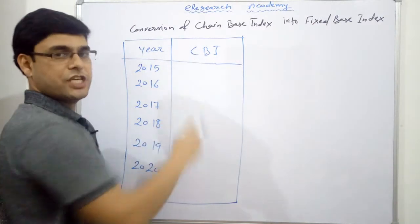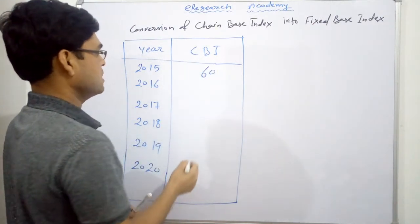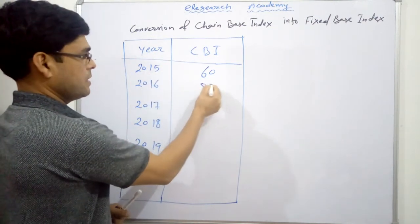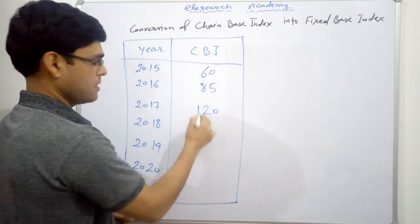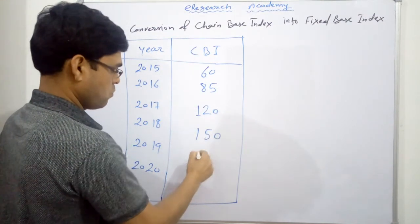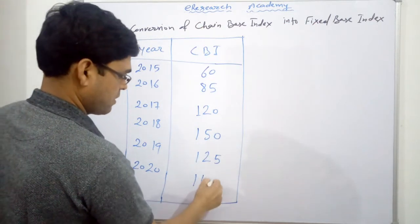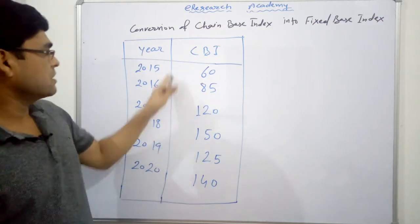And we will be given this chain base index here. Chain base index, let us suppose this is 60 here, 2015, then 85, then 120, then 150, 125 and 140. So let us suppose these are the chain base index for these years.